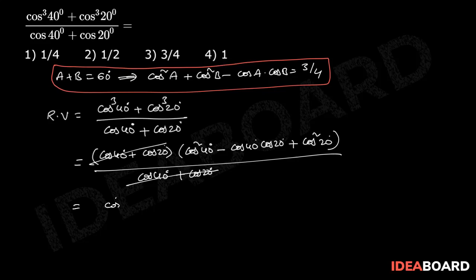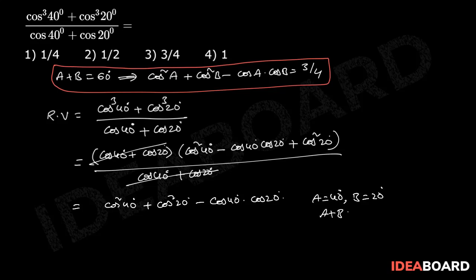This leaves cos square 40 degrees plus cos square 20 degrees minus cos 40 degrees into cos 20 degrees. Here A equals 40 degrees, B equals 20 degrees, and A plus B equals 60 degrees. Applying the above identity, we get 3 by 4. So the correct answer is the third option.